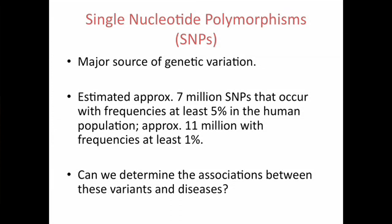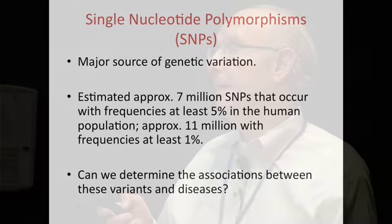Single nucleotide polymorphisms, or SNPs, are a major source of genetic variation. An estimated 7 million SNPs occur with a frequency of at least 5%, and about 11 million with frequencies of at least 1%. It's a tremendous amount, and determining the association between these variants and disease is a daunting task — but much progress has been made.